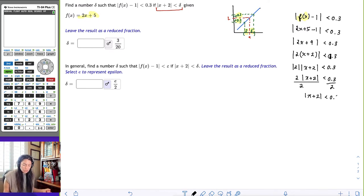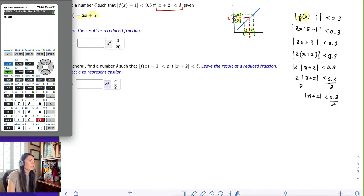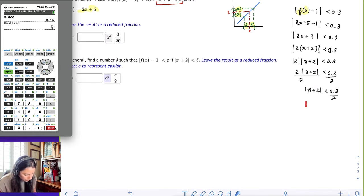And again, you can always simplify this part as like 3 tenths. You can put it in the calculator as 0.3 divided by 2. And then it gives you that. And then feel free to hit this math button and then hit 1 to fraction and it'll give you the 3 over 20.